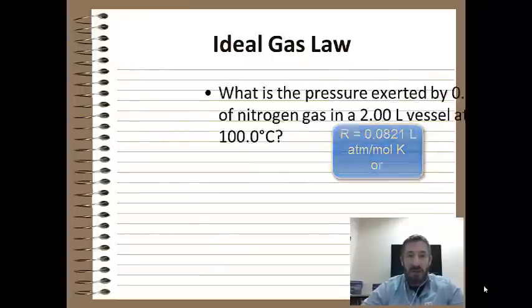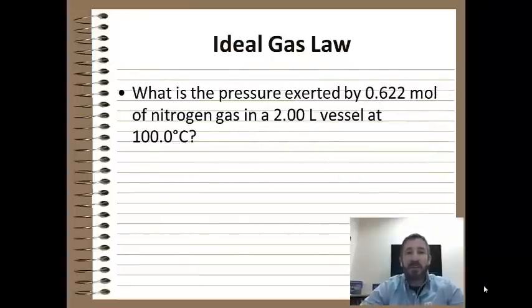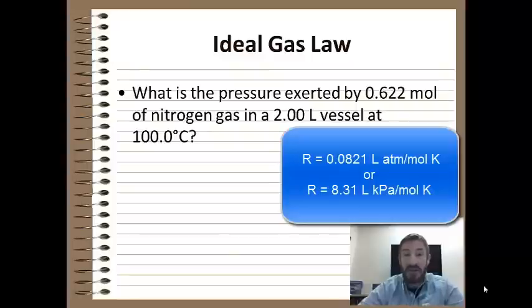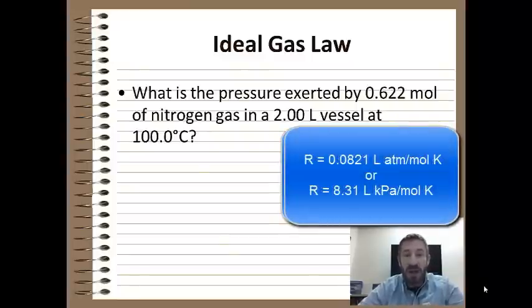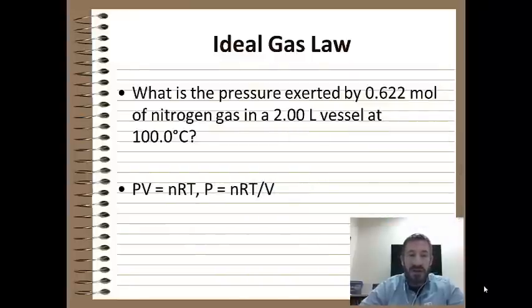So the ideal gas law. Let's do a problem here. What is the pressure exerted by 0.622 moles of nitrogen gas at two liters in a vessel at 100 degrees Celsius? Well, the equation we're going to use for this is PV equals nRT. Now, how this is different from any of the other equations we've used is that right now we only have a gas in one condition.